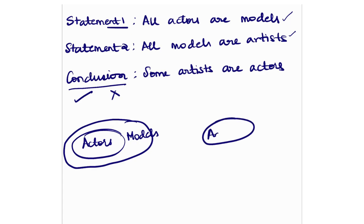So it could be there are four actors. But it could also be that there are only four models. So all actors are essentially models, meaning there is no model who is not an actor. So in this case, maybe the actors are four, and the total number of models are seven, which means there are three models who are not actors. In this case, the total number of actors are four, and the total number of models are also four. So this is statement number one. Now statement number two is all models are artists. Now, why did I put some numbers? When you put some numbers, it becomes easier to solve this.